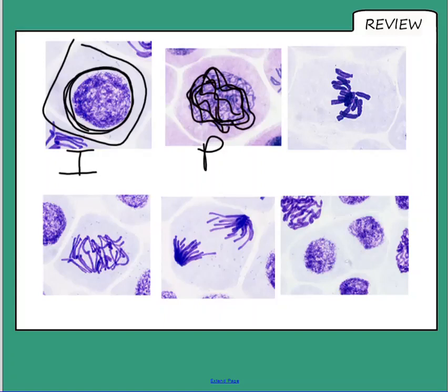And then what happens is they line up on the equator of the cell, so on the middle, so then you get metaphase. You don't need to know the individual stages, but they line up on the middle.